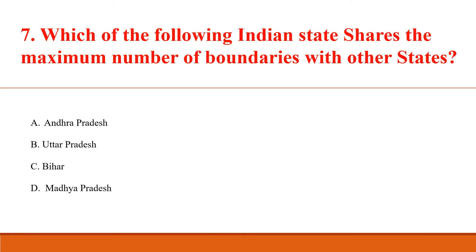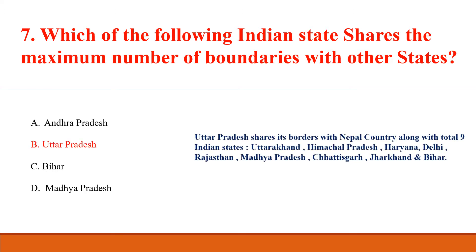Which of the following Indian states shares the maximum number of boundaries with other states? Answer B: Uttar Pradesh. Uttar Pradesh shares its border with Nepal (country) along with a total of 9 Indian states: Uttarakhand, Himachal Pradesh, Haryana, Delhi, Rajasthan, Madhya Pradesh, Chhattisgarh, Jharkhand, and Bihar.